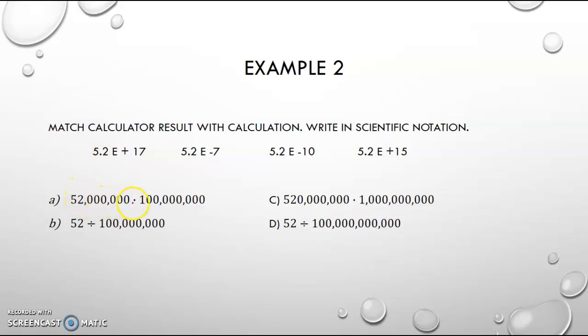So my zeros are 1, 2, 3, 4, 5, 6, 7, 8. We have eight zeros there. And 1, 2, 3, 4, 5, 6. But I've got to move my decimal between the 5 and the 2. So that makes 7.